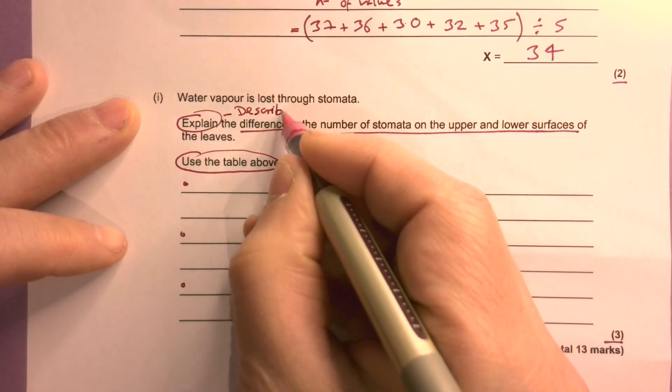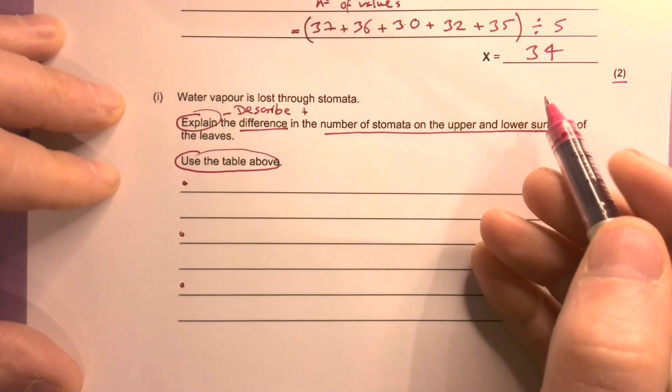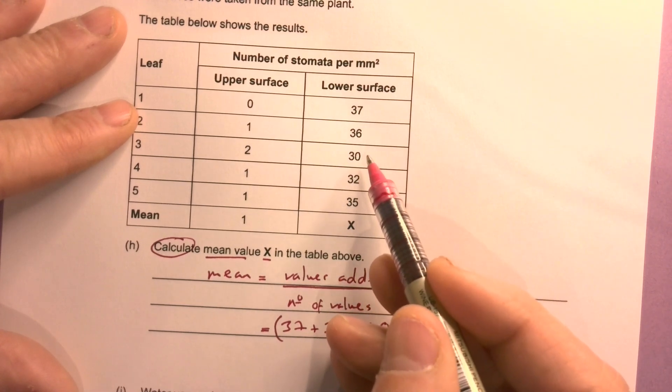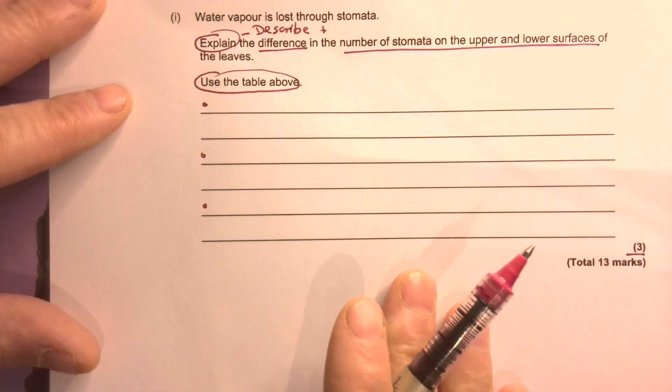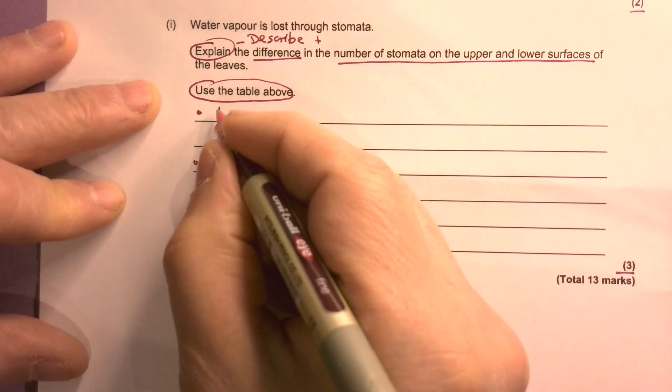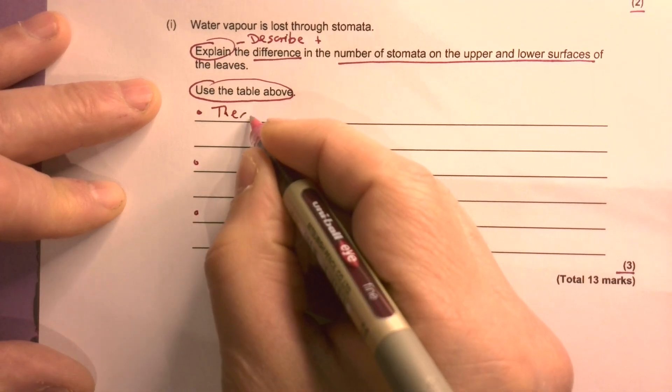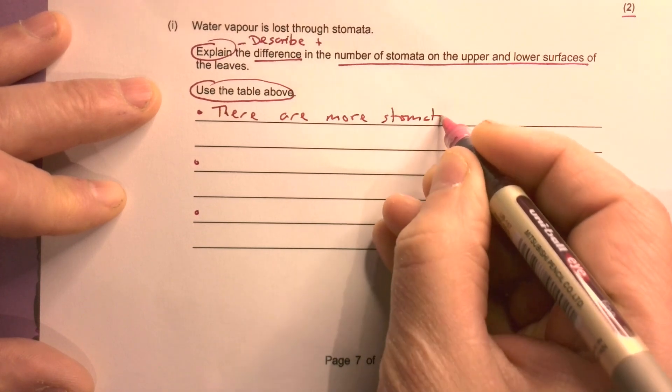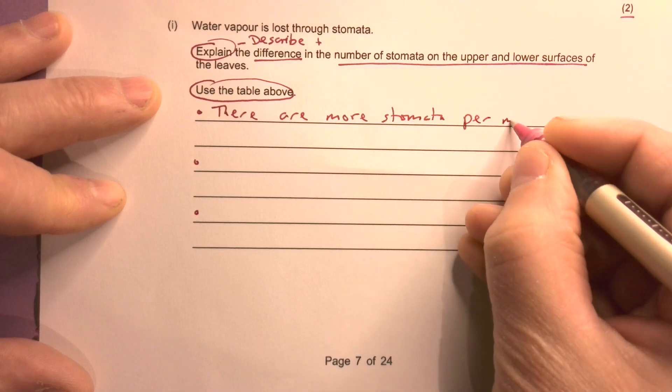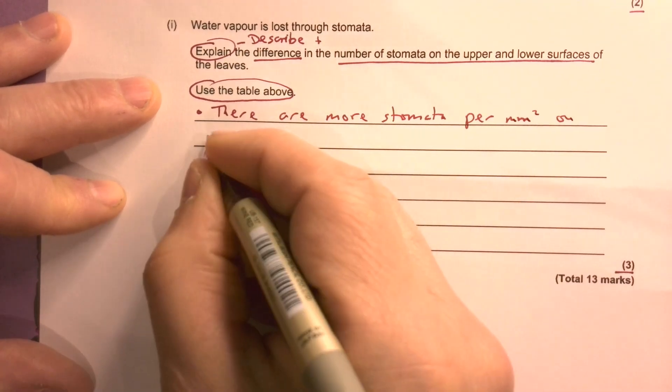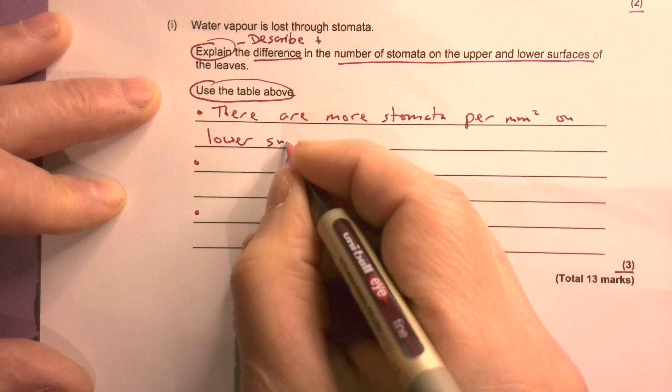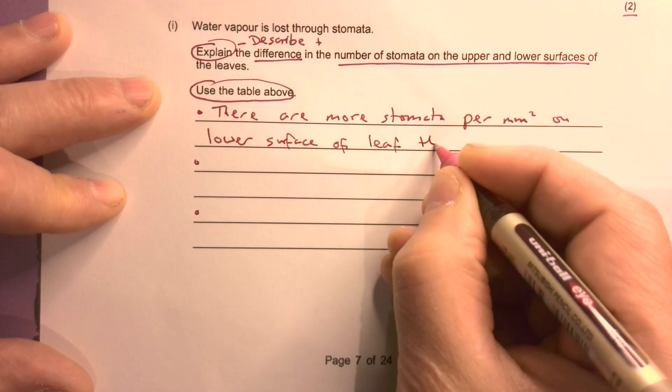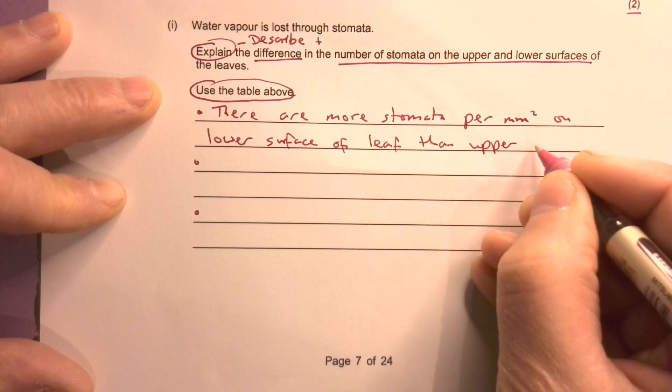Explain means describe plus. So the first thing is, I noticed that just looking at this, there are lots more stomata on the lower surface than the upper surface. That's going to be the first thing - that's the describe part. So there are more stomata per millimetre squared on the lower surface of leaf than upper surface.